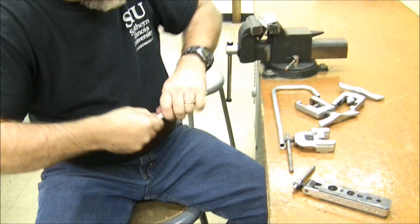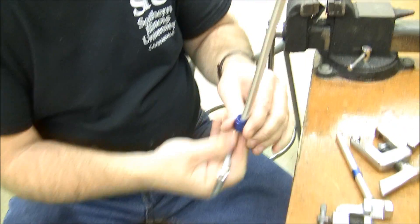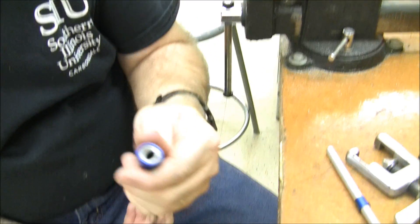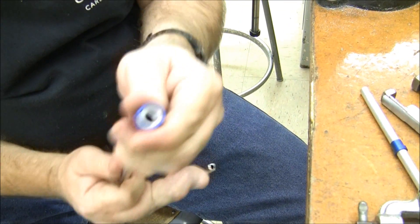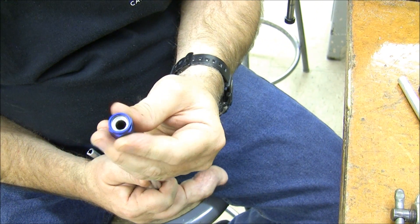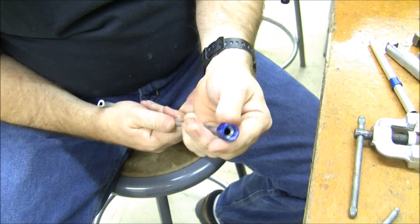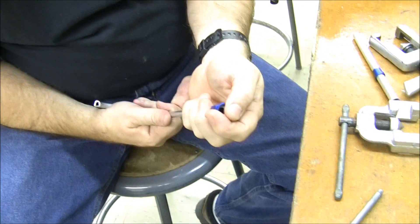Now to check and make sure that my flare is proper, I can make sure that the B-nut goes over the top of the flare. And you can see that I've slightly over wiped this particular flare, it went in but it took a little bit of work, so this flare is acceptable but it's not stellar. And you would want the backup sleeve on the B-nut as well.